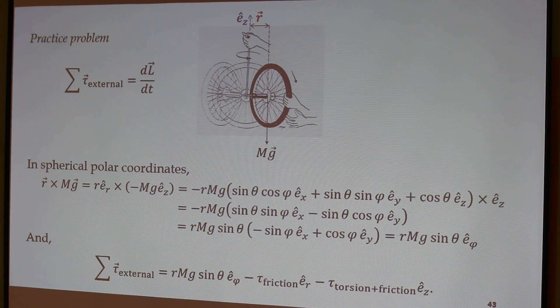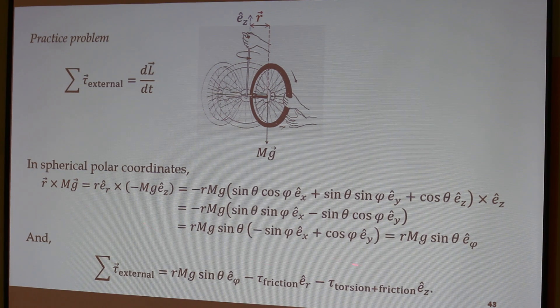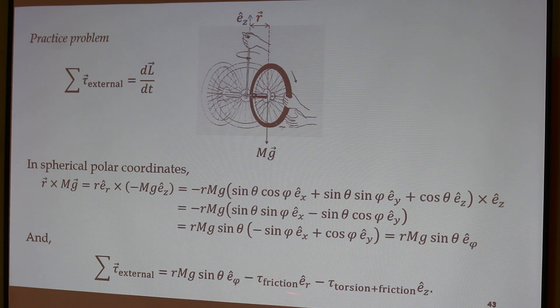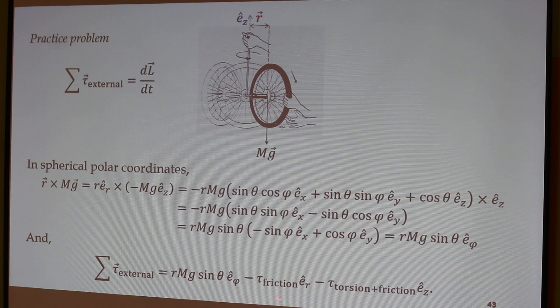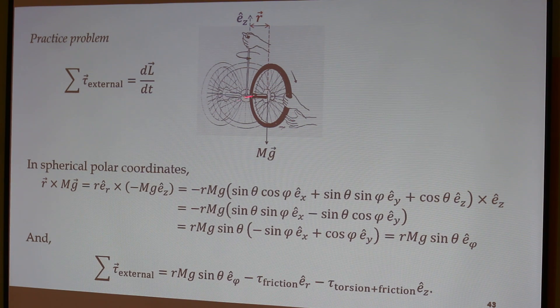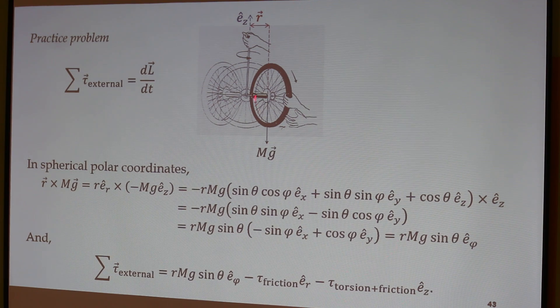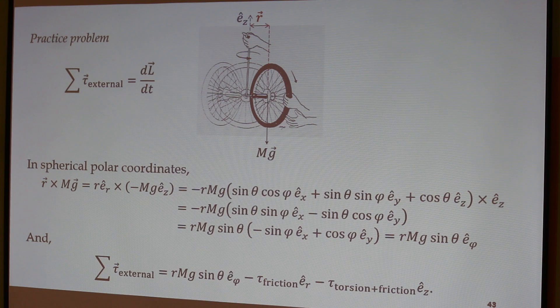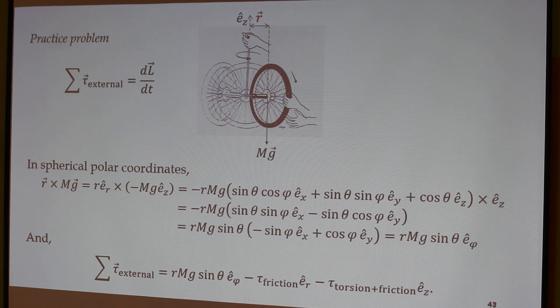These things can be learned, so it is not difficult. Anything that can be learned is not a problem. Remember this. So in spherical polar coordinates I calculate the torque. I take into account the frictional torque. This is the torque due to gravity, this is the torque due to friction along the axis here. And this is the torque due to the twisting of the rope. So you observed just now the twisting of the rope.